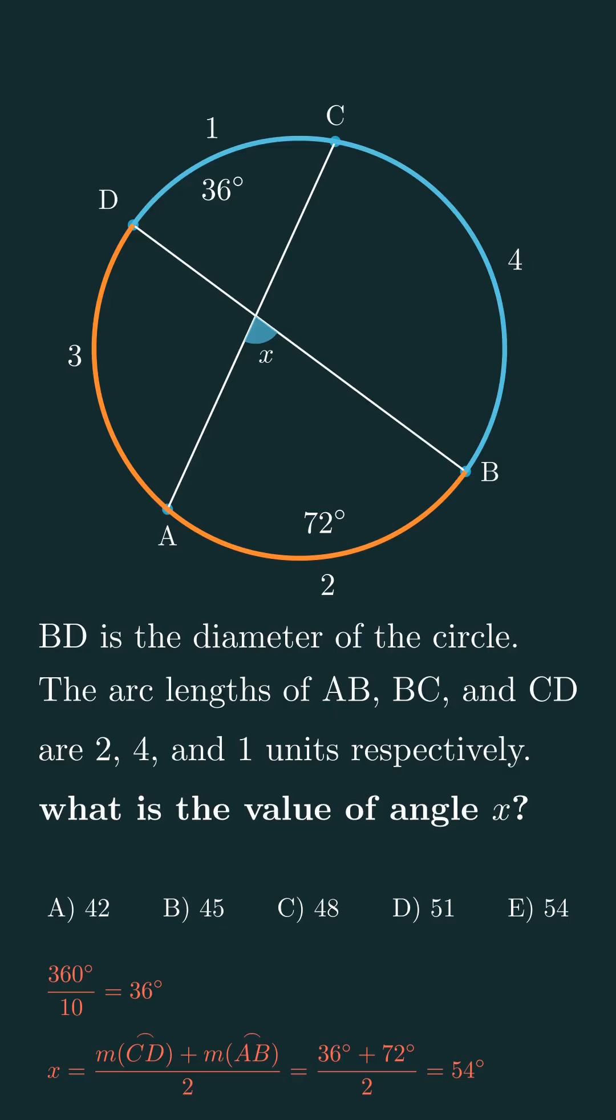So 36 plus 72 divided by 2 equals 54. The correct answer is option E. Alright, see you in the next question.